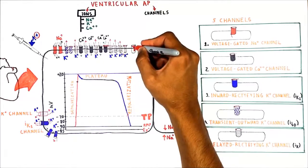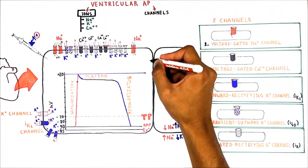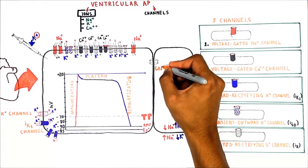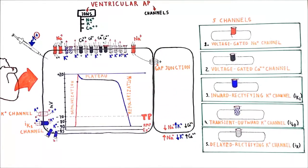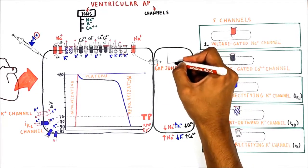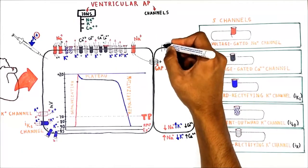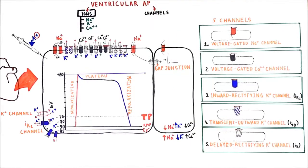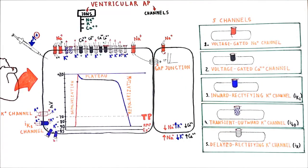It is very important to note that when sodium rushes into one cell and depolarizes the membrane, some cations pass through gap junctions and enter the adjacent cell. When these positive ions enter the adjacent cell, they take its membrane potential up to threshold. When threshold is reached, voltage-gated sodium channels open and sodium fluxes into that cell, causing depolarization — and so on and so forth.